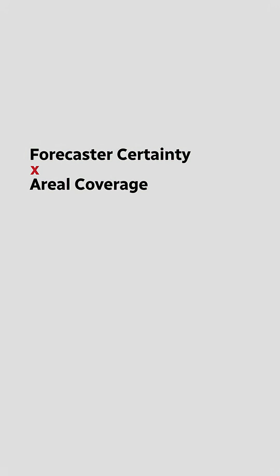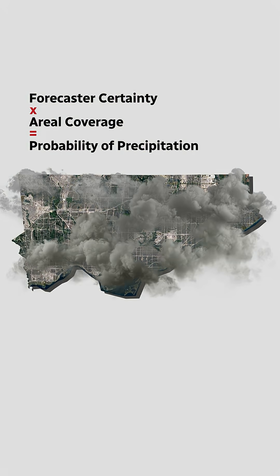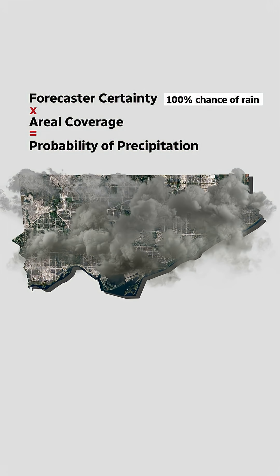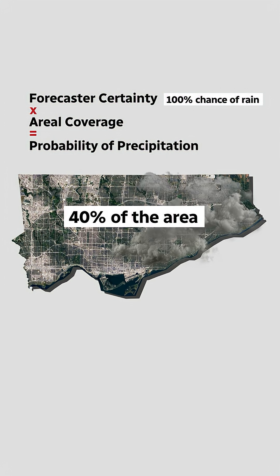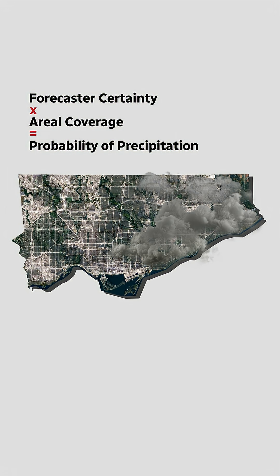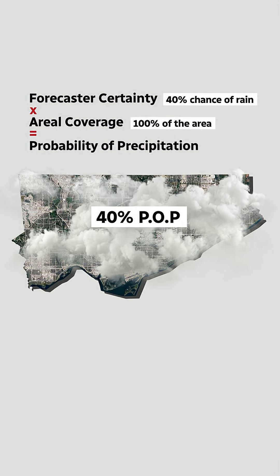The answer is, it's a simple formula: forecaster certainty times aerial coverage equals probability of precipitation, or POP. So we meteorologists do our forecasting for a timeframe. For example, if I'm 100% sure it'll rain this evening, then multiply that by how much area will be hit — let's say it's only 40% of the region. That's a 40% chance of rain. But it's also true to say if I'm only 40% confident it'll rain, but everywhere — still 40% chance.